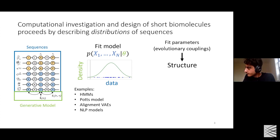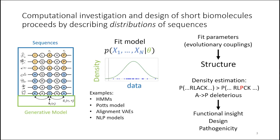You also have this probability, and you can derive insight from it directly. For example, if you see a mutation that decreases the probability of a sequence, you can assume that some evolutionary constraint has been violated, and that mutation might be deleterious. In this way, you can derive the ability to design sequences, insight about pathogenicity, and insight as to which parts of the sequence are important and have certain function.